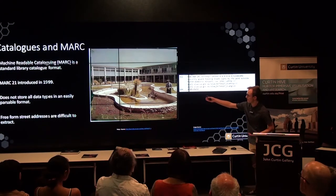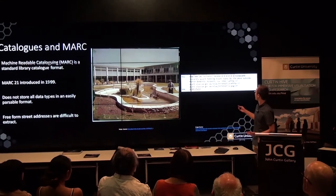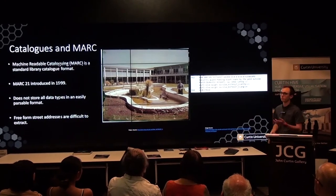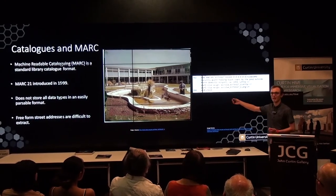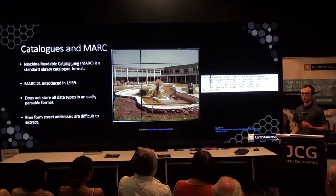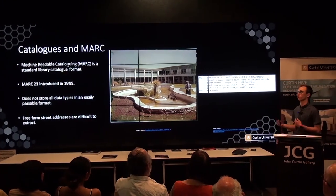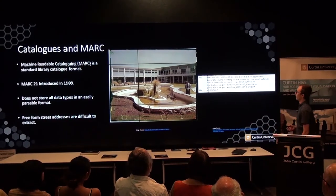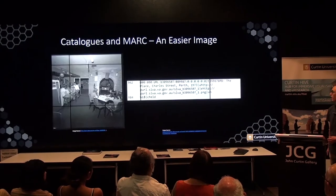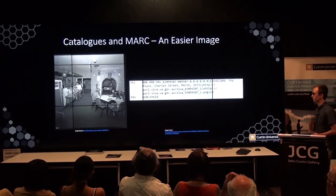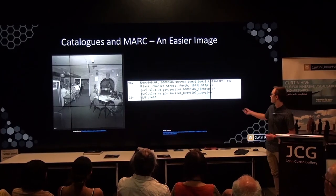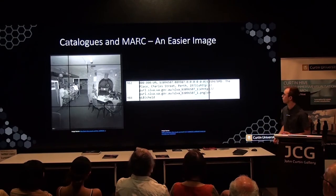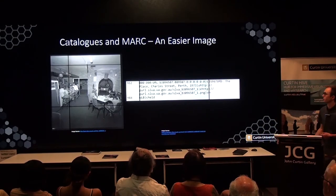Here we have an image of a man feeding swans, and the catalogue comment reads: 'security guard feeding black swans by the pond outside Perth Domestic Airport.' There is location text here — Perth Domestic Airport — but it's in amongst the description of the image, which for a computer is difficult to discern. Some descriptions are a lot simpler; for example, 'Charles Street, Perth' — a computer can easily extract that, as the comment field is small with not much processing required.